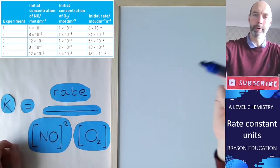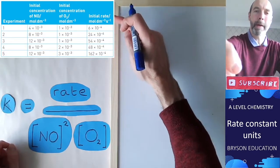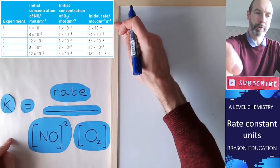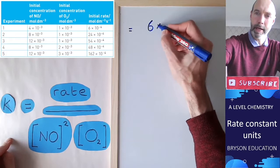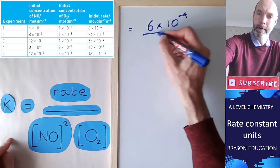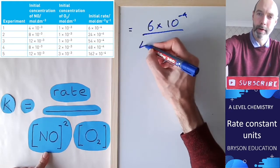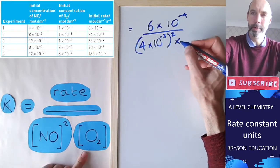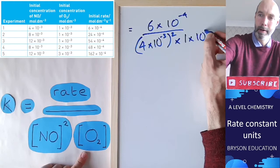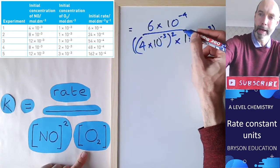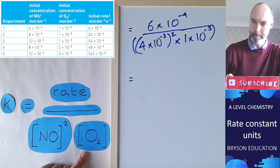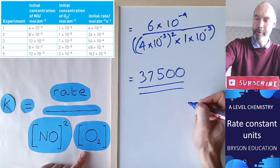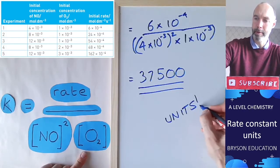Now we've got k equals, we're going to use this rearrangement to determine a value for the rate constant. We've got several experiments here; we can pick any one and we'll get the same answer. I'm going to use the results from experiment one where the rate was 6 times 10 to the minus 4, divided by NO2 squared which is 4 times 10 to the minus 3 squared, multiplied by the concentration of O2 which is 1 times 10 to the minus 3. Punch this into my calculator and we get a value of 37,500, but we need to work out the units.